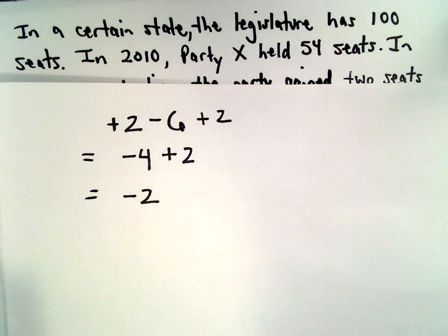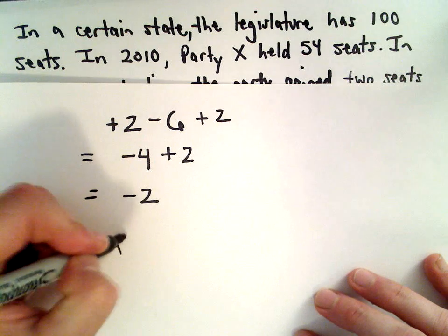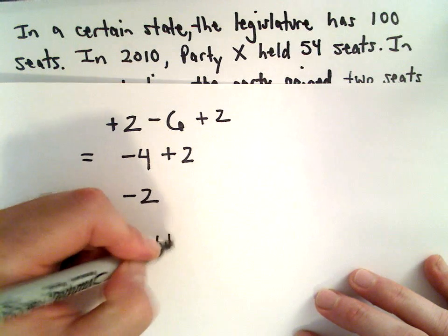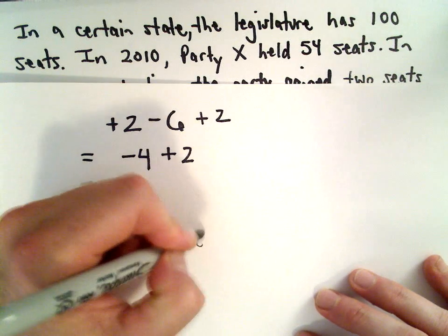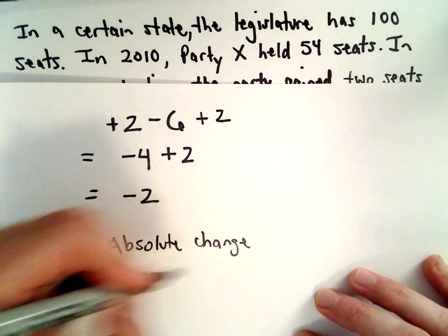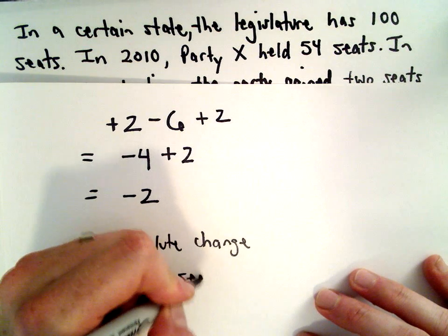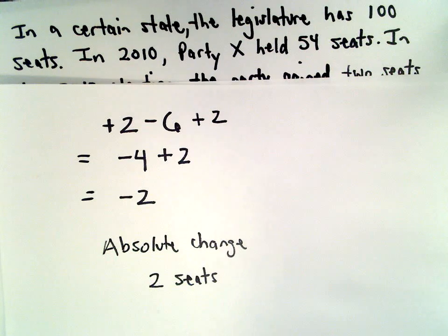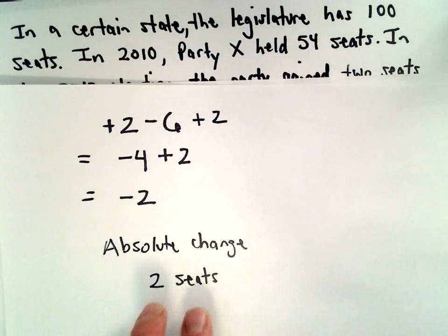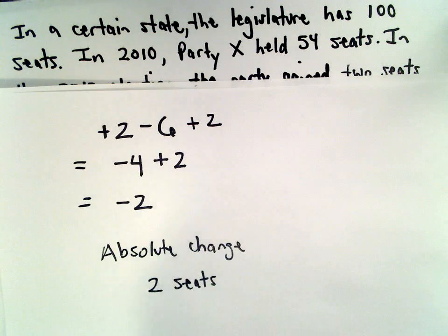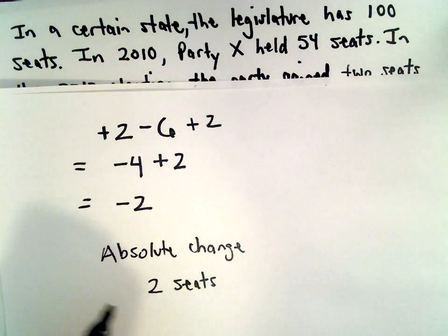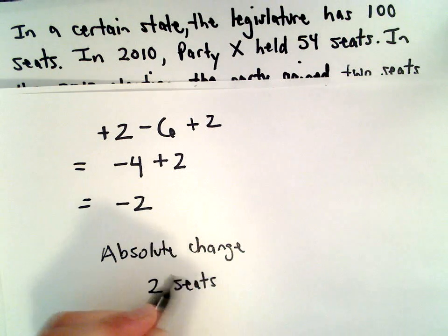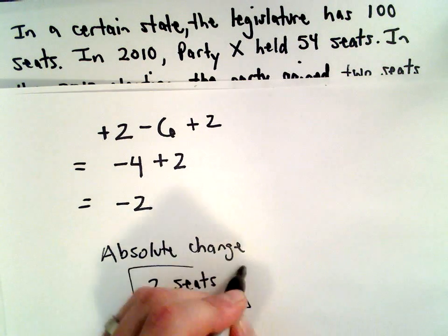But we want the absolute change. The absolute change is going to be two seats. It kind of doesn't matter whether they won the seats or they lost them — there's going to be a net change of two seats at the end of the day, and that's the answer they want. So it's kind of a trick question. You don't want to use negative two; you would say the absolute change is two seats.